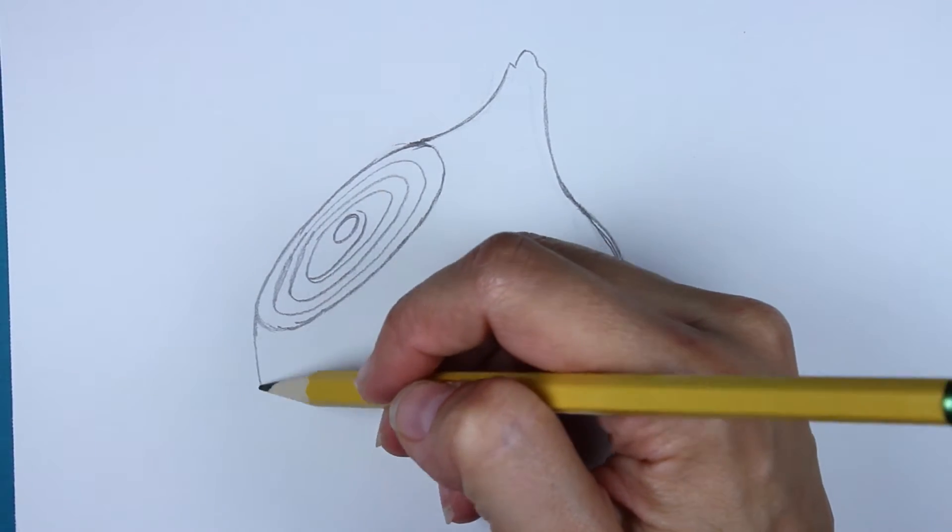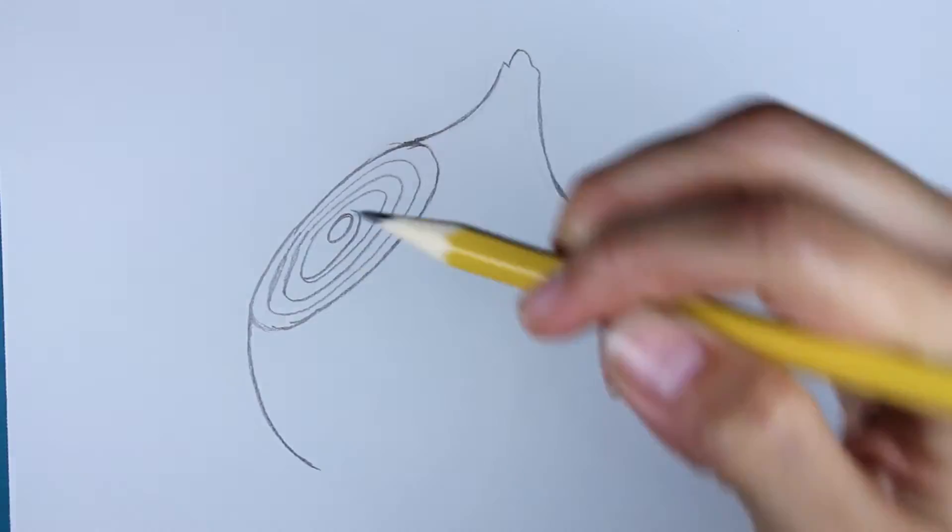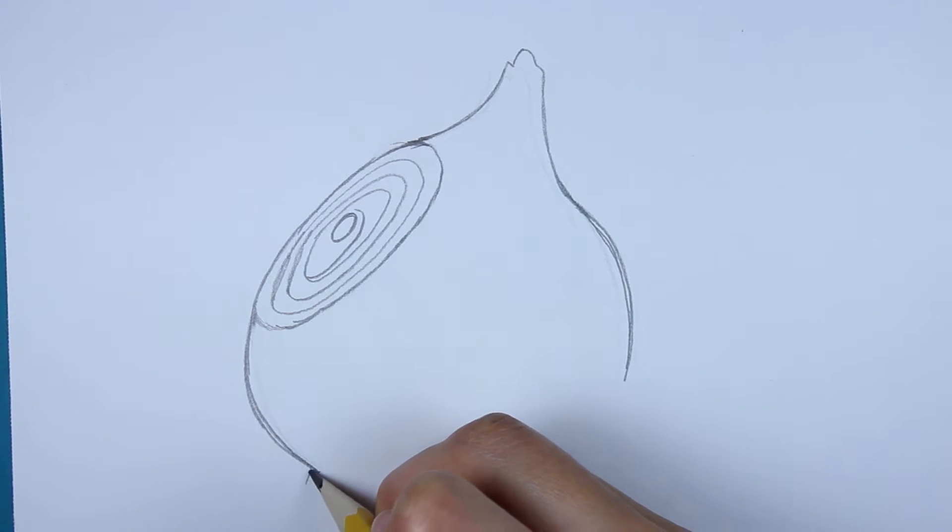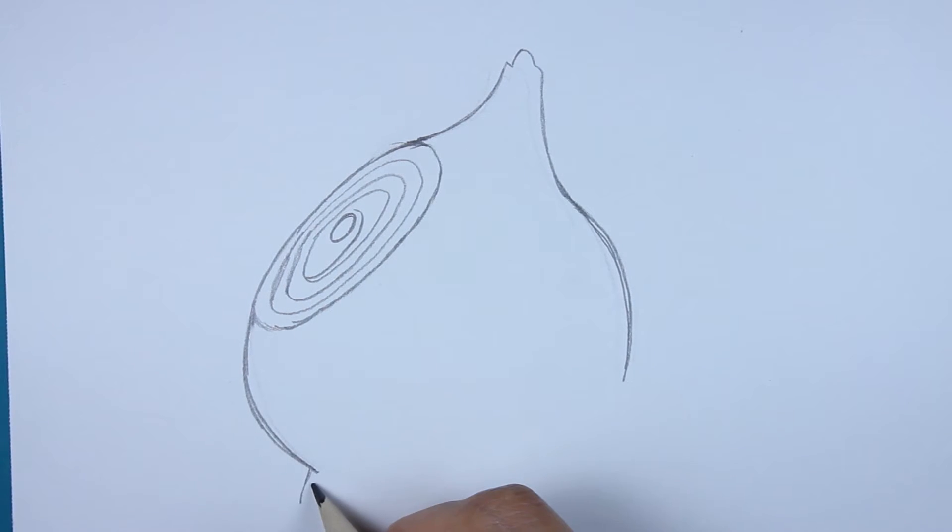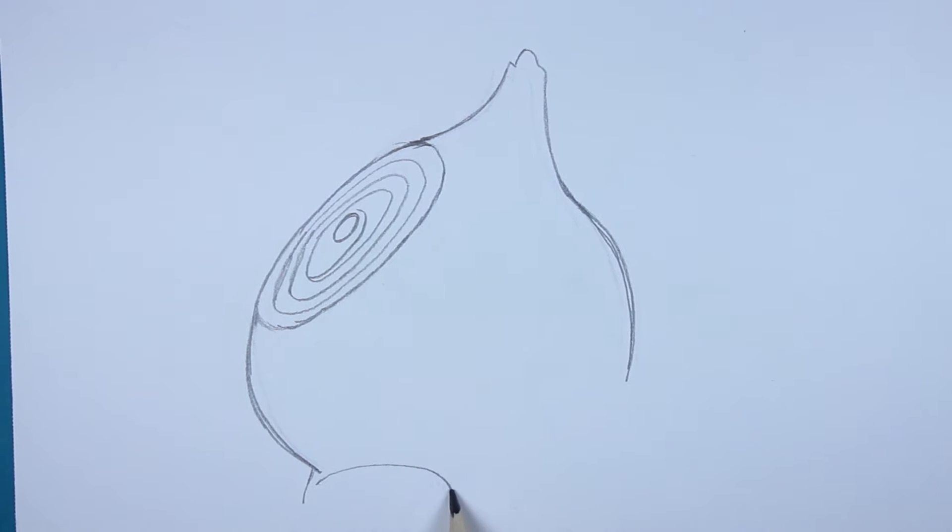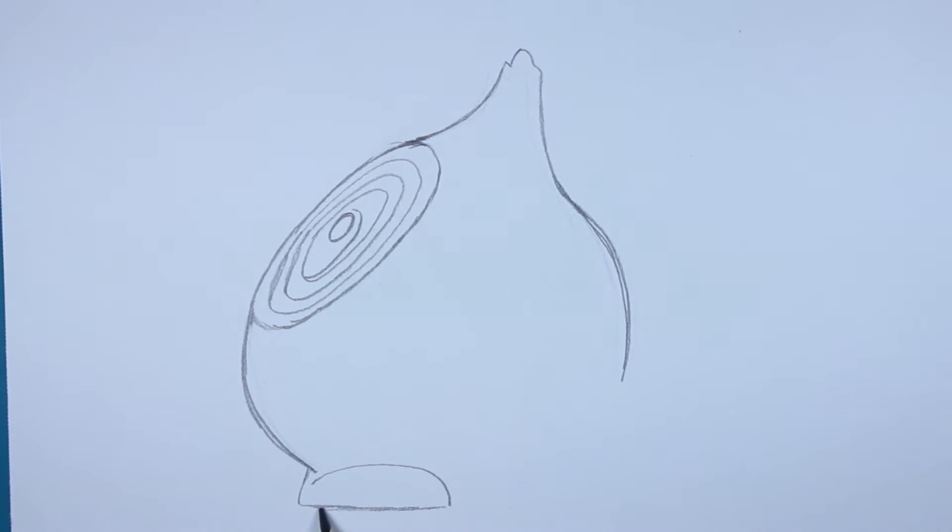And then on this side, just come on down and around like this. And from here, we're going to work on these feet. So we're going to come down this way. And then here, we're going to make it semi oval. So up and around and then come straight across at the bottom.